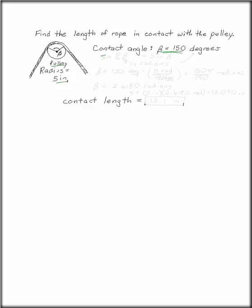Arc length in a circle is given by s equals r beta, where beta is the angle and r is the radius of the pulley, in this case 5 inches times beta. The problem is, to use this, beta has to be in radians, and right now beta is in degrees.